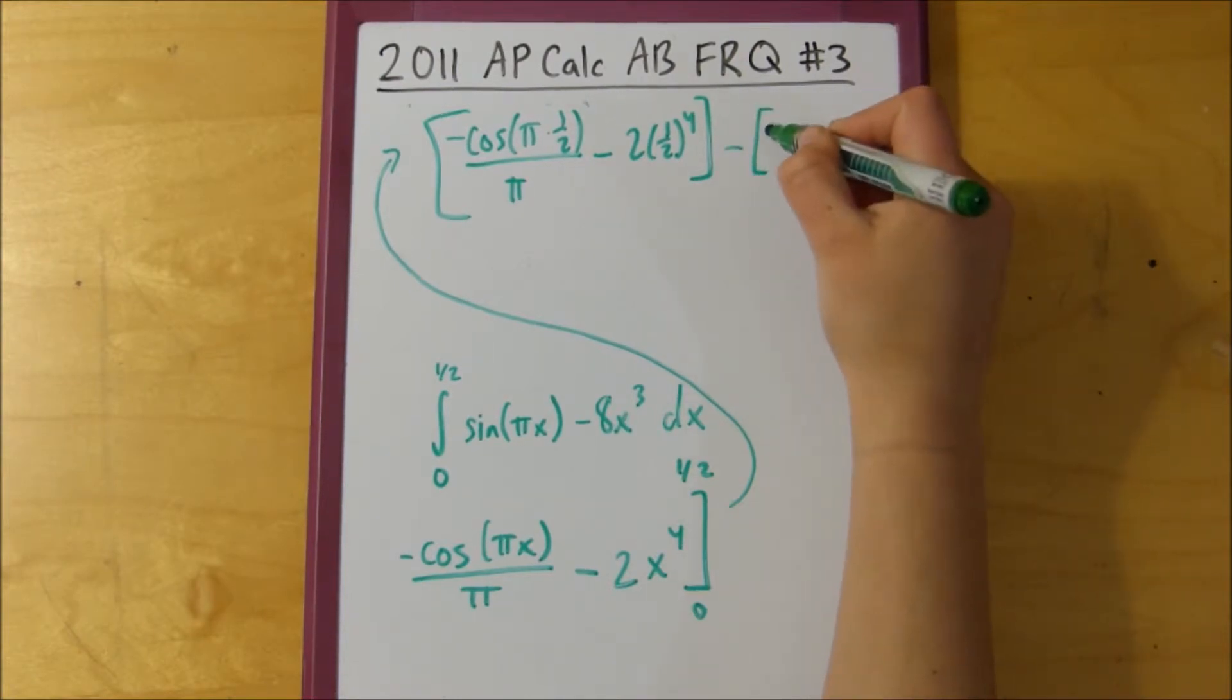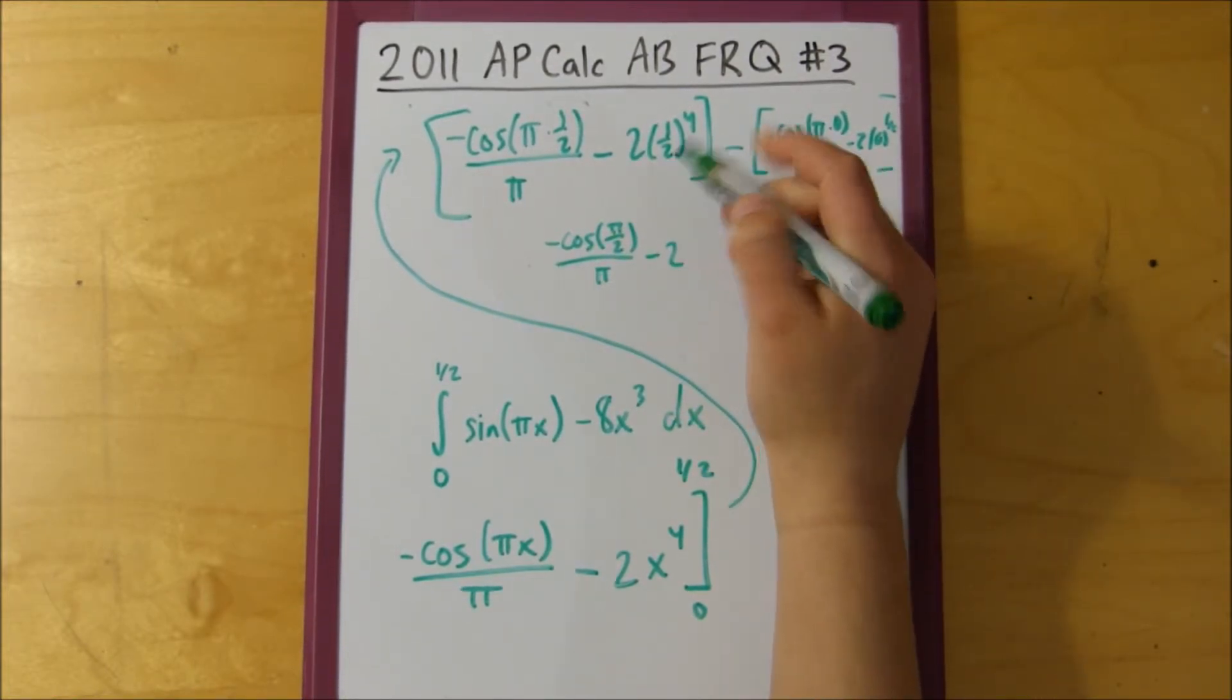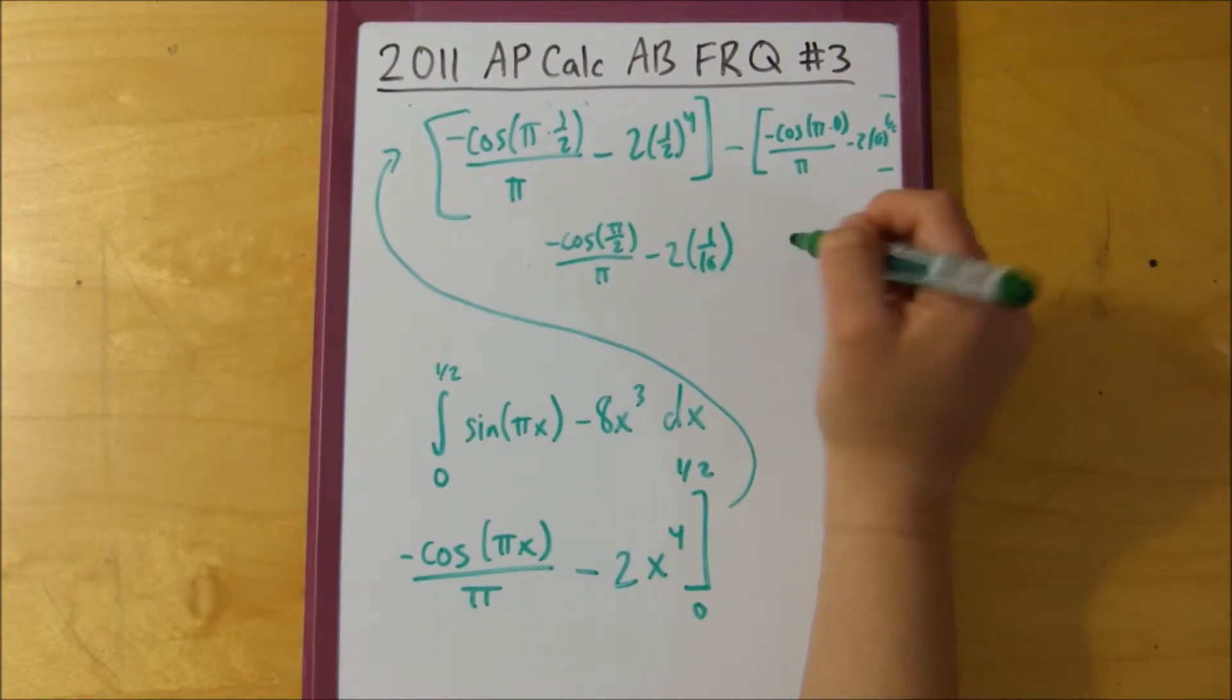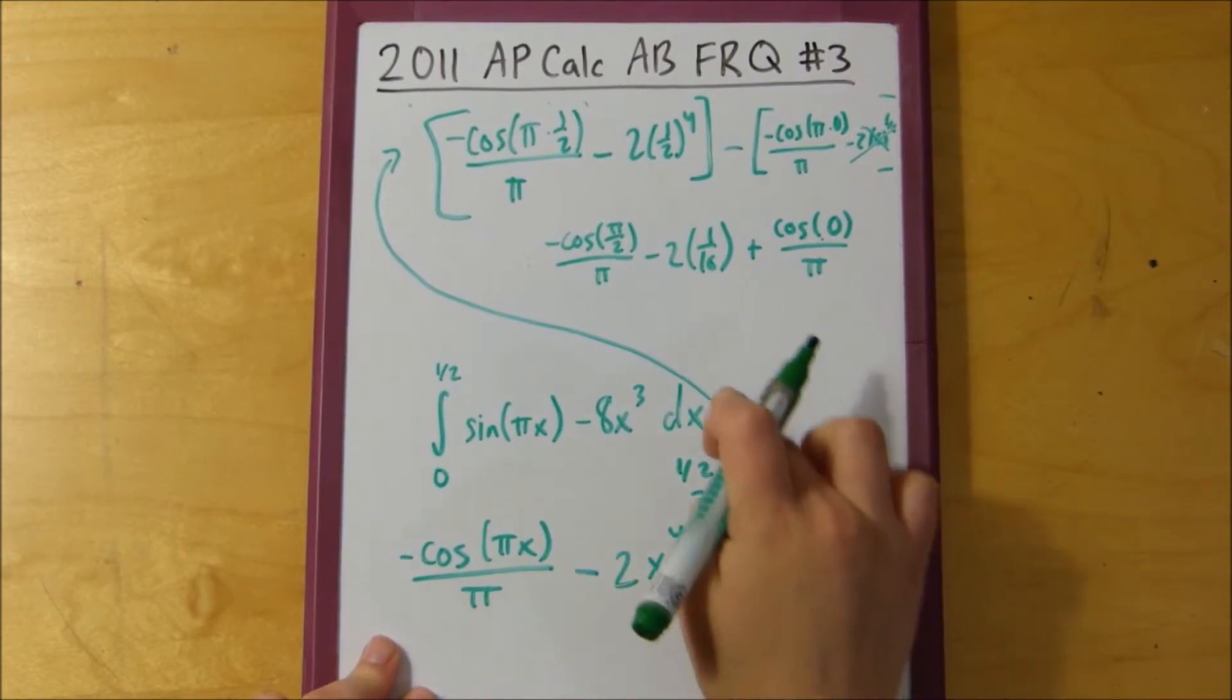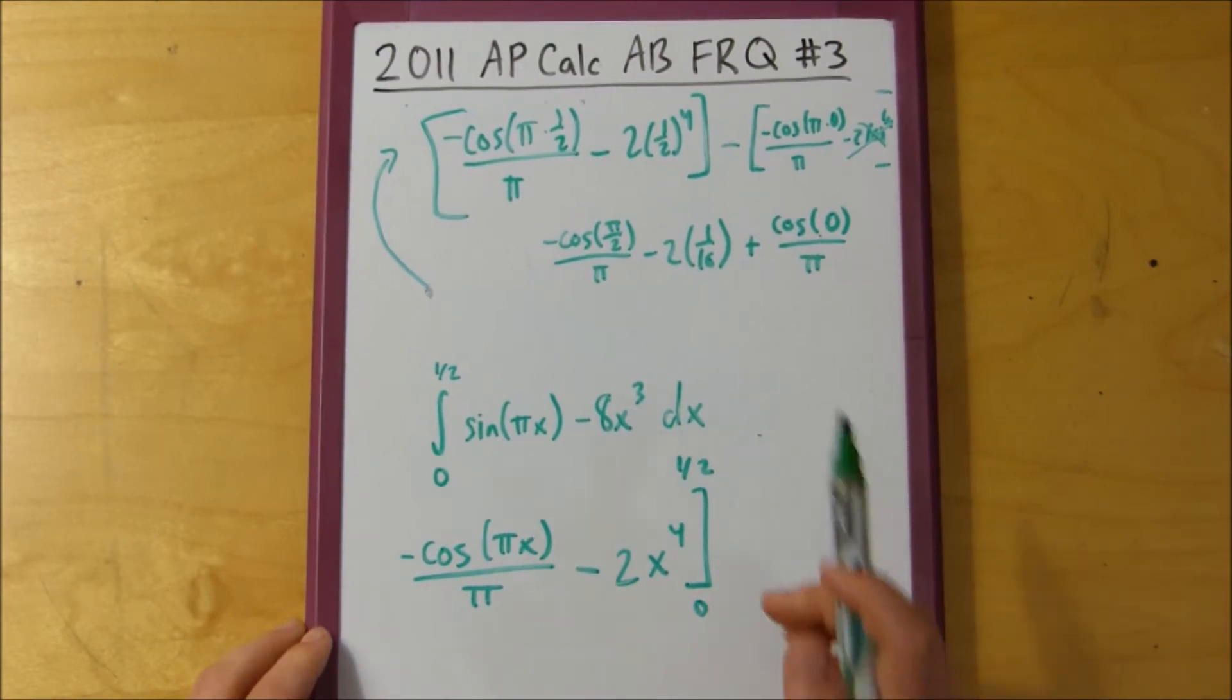So all of this minus negative cosine of pi times 0 all over pi minus 2 times 0 to the 1 half. Now let's simplify things out. Negative cosine of pi over 2 all over pi minus 2, 1 half to the fourth power is 1/16th, and then we can get rid of that. That's just 0. We have a negative and a negative. We have a positive cosine of 0 over pi. Let's keep simplifying.